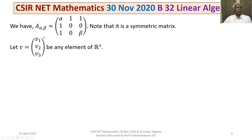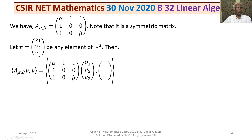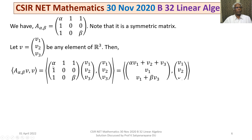Let V = (v₁, v₂, v₃) be any element of R³. Then the inner product ⟨A(α,β)·V, V⟩ equals the inner product of matrix A times V with V. Multiplying A by V gives (αv₁ + v₂ + v₃, v₁, v₁ + βv₃). The inner product then becomes (αv₁ + v₂ + v₃)v₁ + v₁·v₂ + (v₁ + βv₃)v₃.